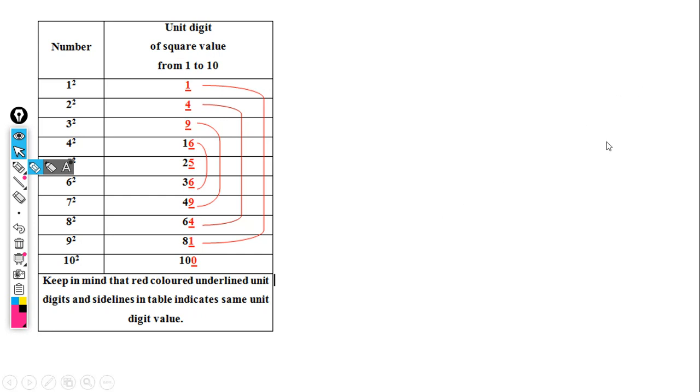For example, let's take 16. The square root of 16 is easy because it's a perfect square. But for non-perfect squares, let me show you an easy shortcut method.